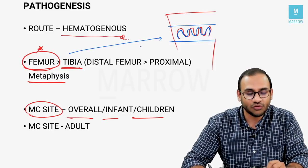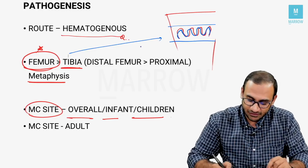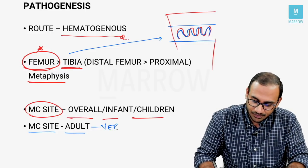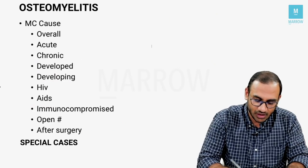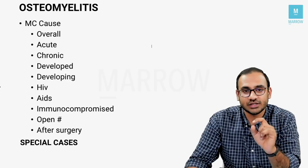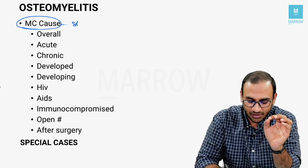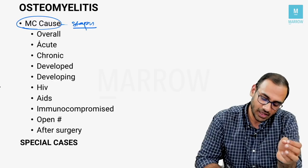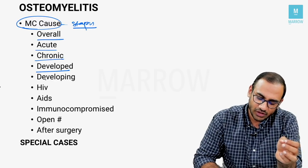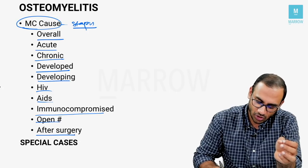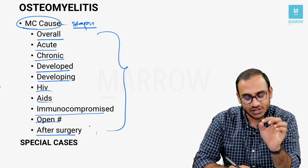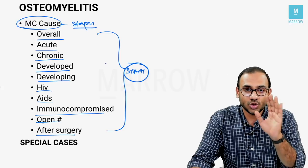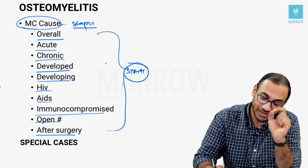The most common site overall is the distal femur. In adults, the most common site of osteomyelitis is the vertebra. Regardless of whether they ask about acute, chronic, developed world, developing world, HIV/AIDS, immunocompromised patients, open fracture, or post-operative cases — the answer does not change. It remains Staphylococcus aureus as the most common organism causing osteomyelitis.